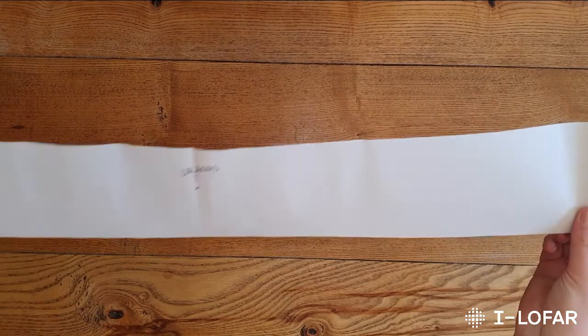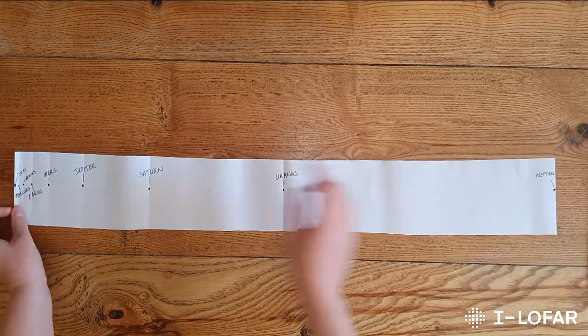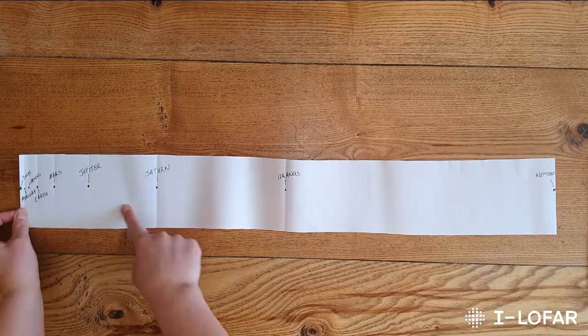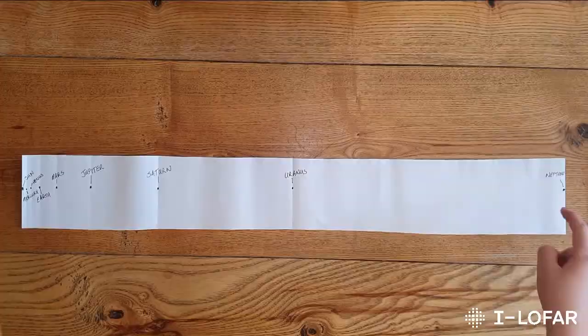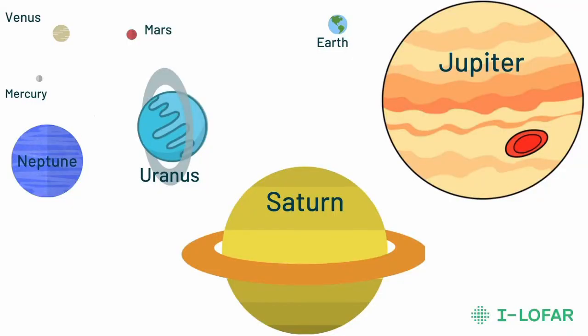It might not be as you expected — things are certainly more spread out further away and squished nearer to the Sun. How does it differ to your original guess? In the bio below you'll find a link to a sheet where you can make your own scale of the planets.